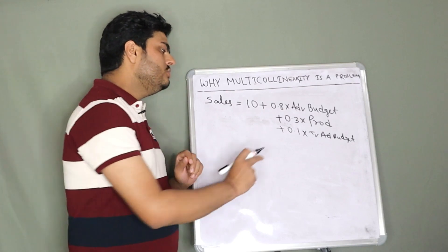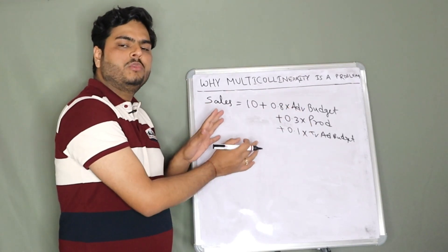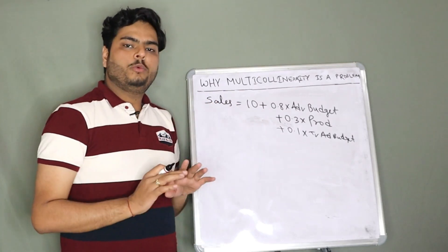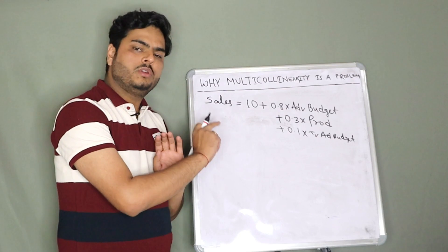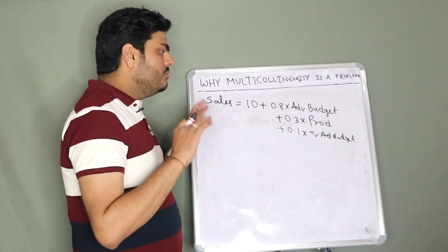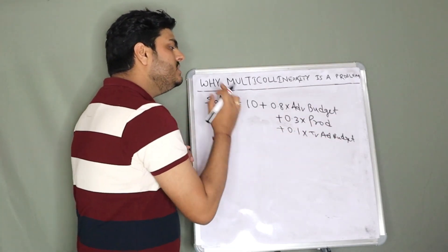Now TV ad budget is a component of total ad budget, right? Hence, these two variables are highly correlated. This scenario in a regression model or any model is called a multicollinearity scenario. But this is a problem in regression only.